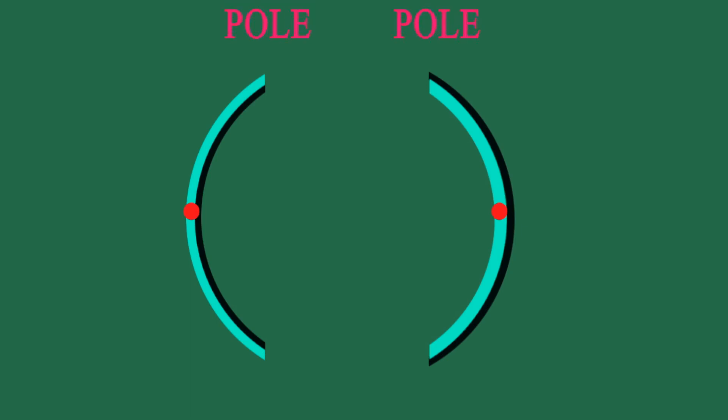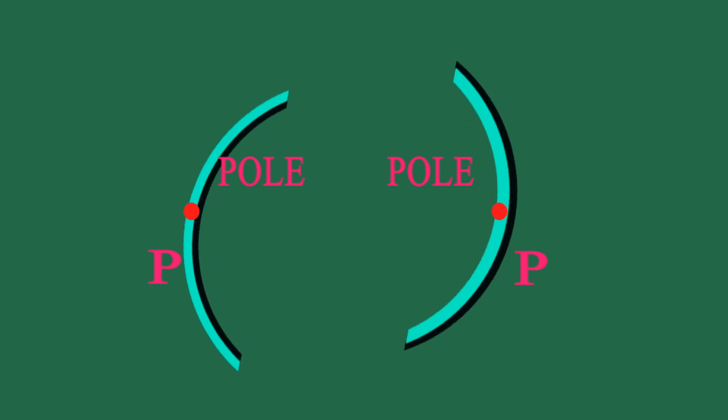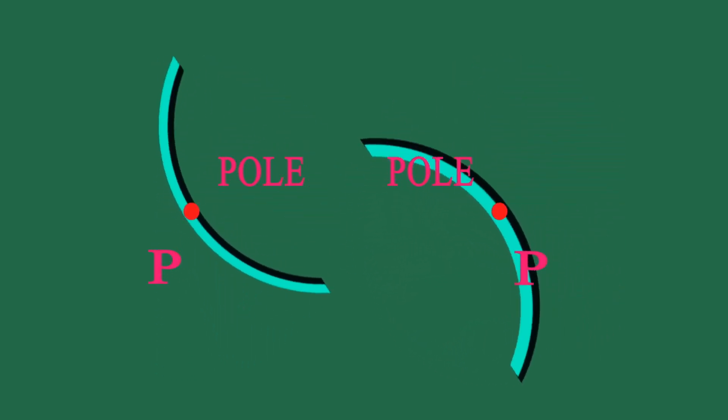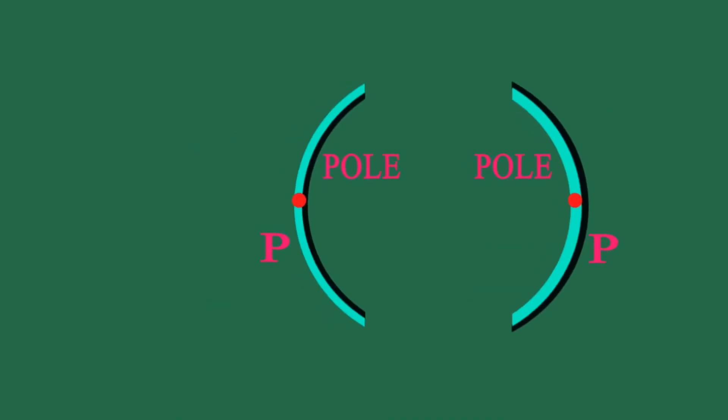If you observe both convex and concave mirrors, each will have a geometrical center. This point is called the pole and it is denoted as capital P. If you divide the mirror into two parts, the center divides it in two ways. If you rotate this mirror at the pole it will appear round.